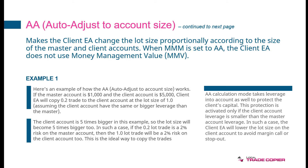The AA calculation mode also takes leverage into account to protect the client's capital. This protection is activated only if the client account leverage is smaller than the master account leverage. In such a case, the client EA will lower the lot size on the client account to avoid margin calls or stopouts.